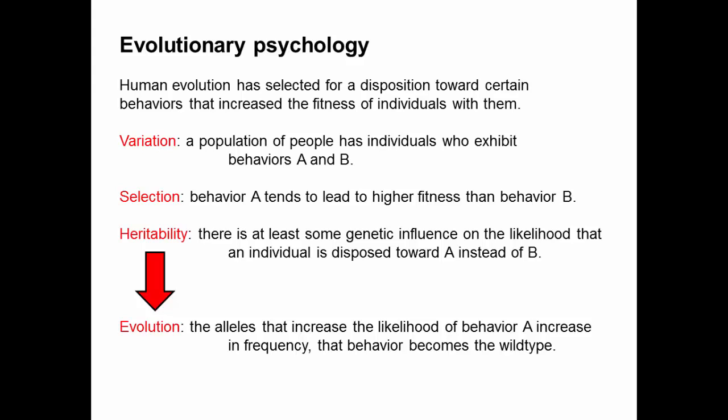If these three things are going on, then the alleles that increase the likelihood of behavior A would increase in frequency, and over time that behavior would go from being a variant within a population to being the wild-type behavior, where now everybody in the population has an increased propensity towards behavior A instead of B. We could end up with a population having both behaviors A and B, but the population has evolved to do behavior A more than behavior B.